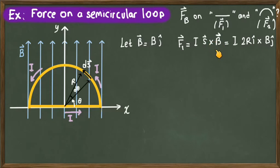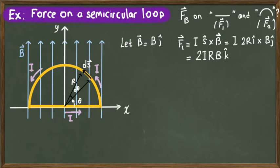This will be the cross product with the magnetic field B times j, where B is constant. We take the cross product of unit vectors i and j, which gives k. The result is F1 = 2IBR in the positive z direction, which is outward from the plane of the board.